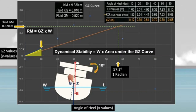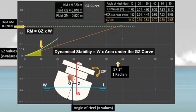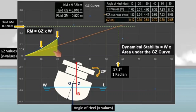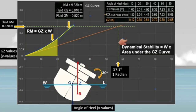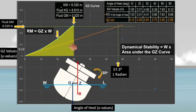Observe the ship's righting lever as she heels at 20 degrees — the righting lever increases to 0.30 meter and the curve forms up to 20 degrees, with the area under the curve also increasing. So at 20 degrees heel, both the moment of statical stability and dynamical stability increase. As the ship heels to 30 degrees, the righting lever still increases to 0.54 meter, and the area under the GZ curve also increases, so both moments continue to increase.